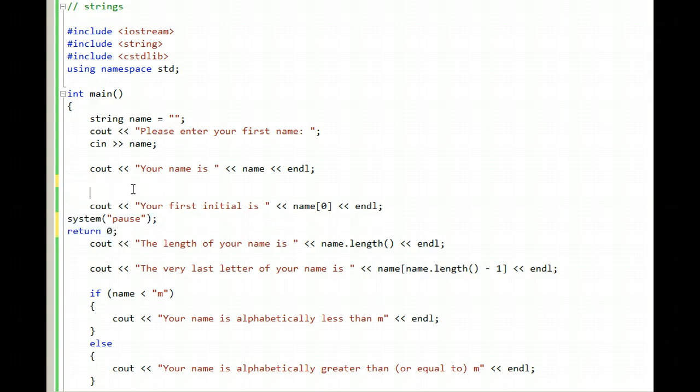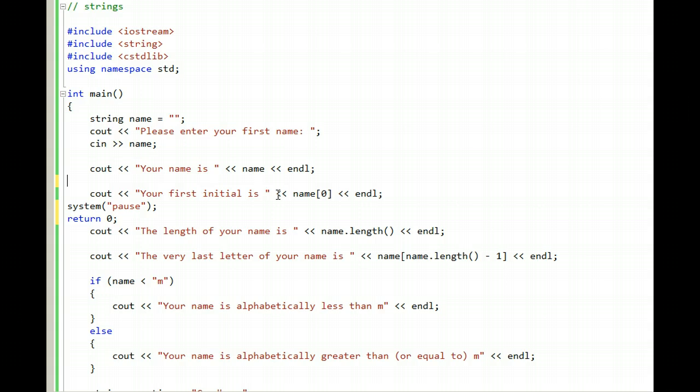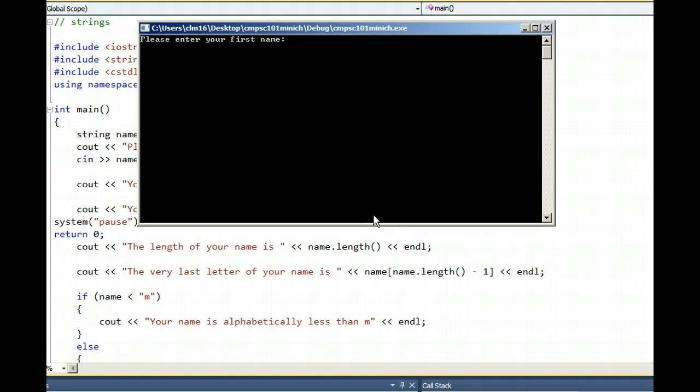Next, it can even tell what your first initial is because a string variable is really just an array. The first letter in name is really considered to be the letter that's in position zero. So I run the program again, typing John as my first name and the letter J prints out because it's in position zero.